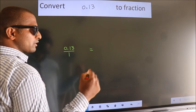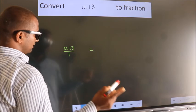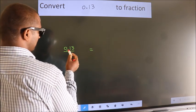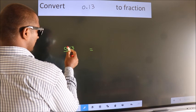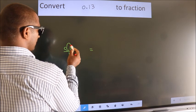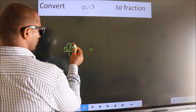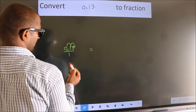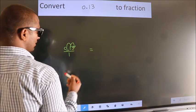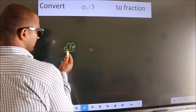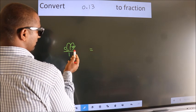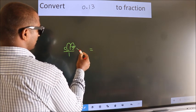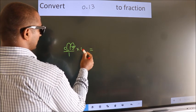For that to happen, we should shift this decimal after one, two numbers. Now, to shift this decimal after two numbers, we have to multiply it with 100.